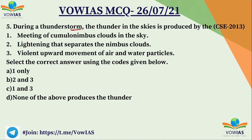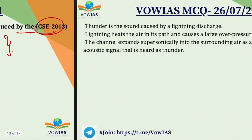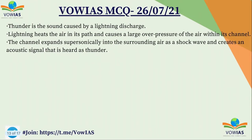The fifth question: During a thunderstorm, the thunder in the skies is produced by — 1. mating of cumulonimbus clouds in the sky, 2. lightning that separates nimbus clouds, and 3. violent upward movement of air and water particles. This is a previous year civil services question from 2013. None of these three are causes of thunder, so D — none of the above — is the correct answer. Thunder is a sound caused by lightning discharge.